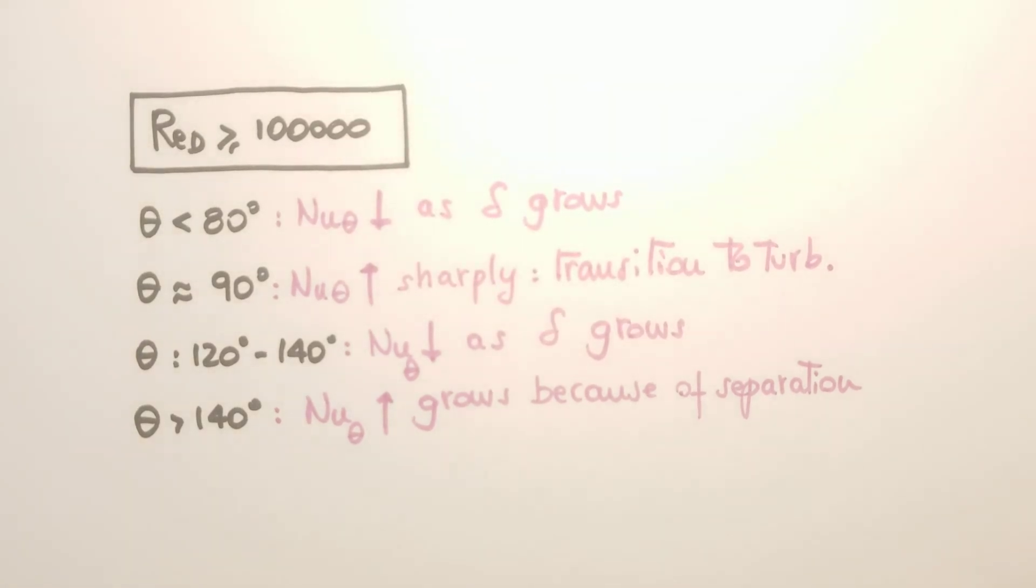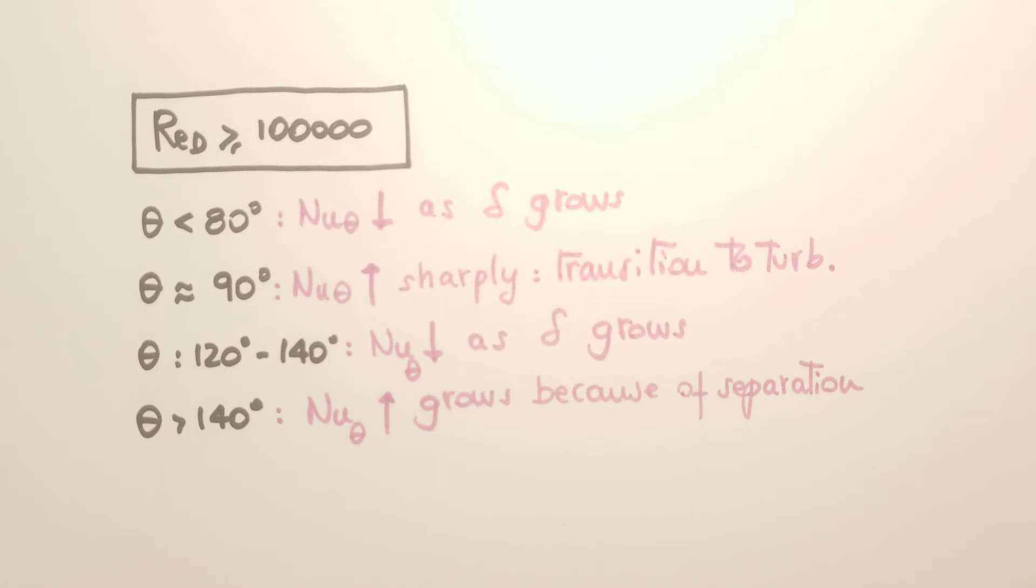What happens instead when the Reynolds number is larger than about 100,000? For theta smaller than about 80, the Nusselt number decreases as theta increases, as the boundary layer also grows in this case.